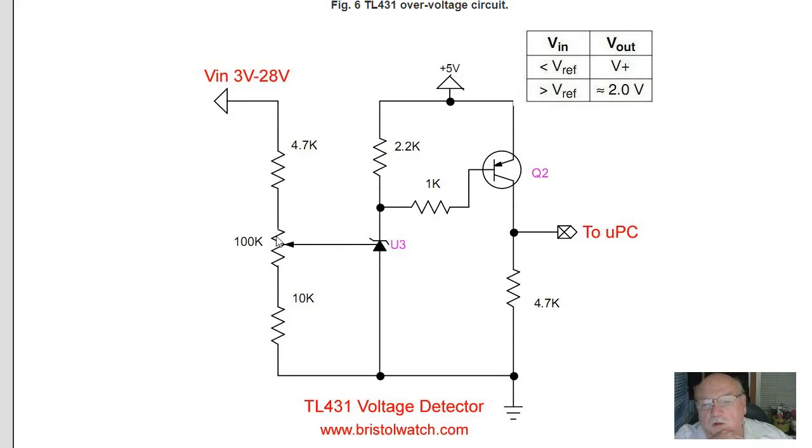So, if you set this voltage here and VIN meets or exceeds that voltage, the output here will go high. You can read it directly with a microcontroller.